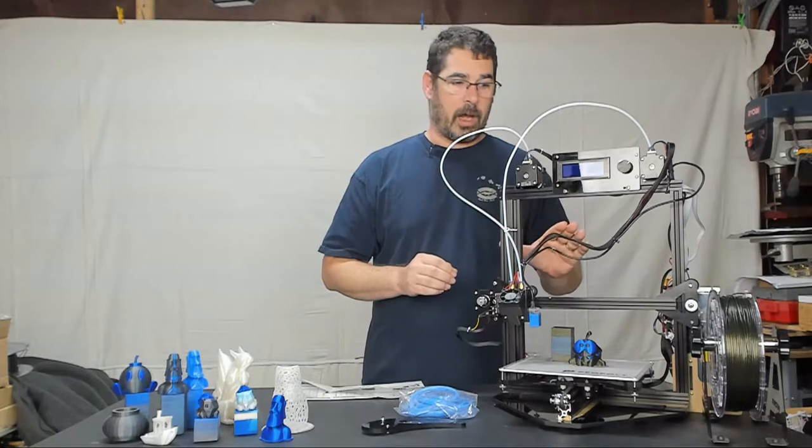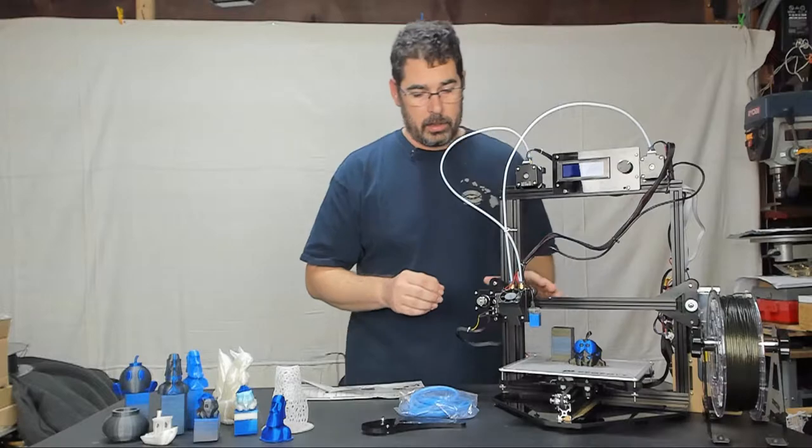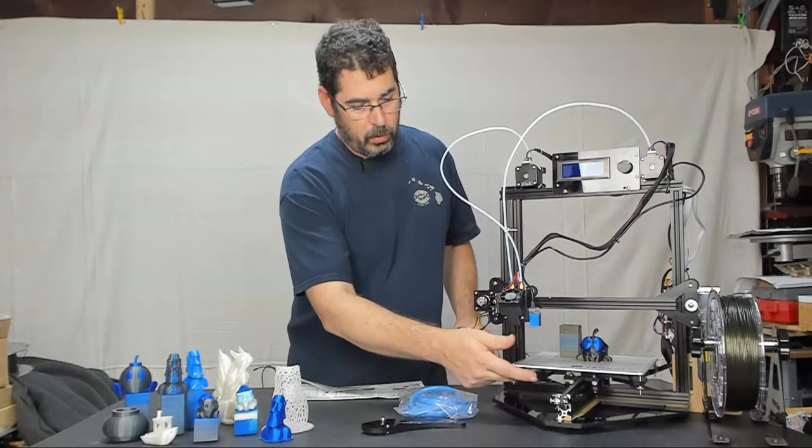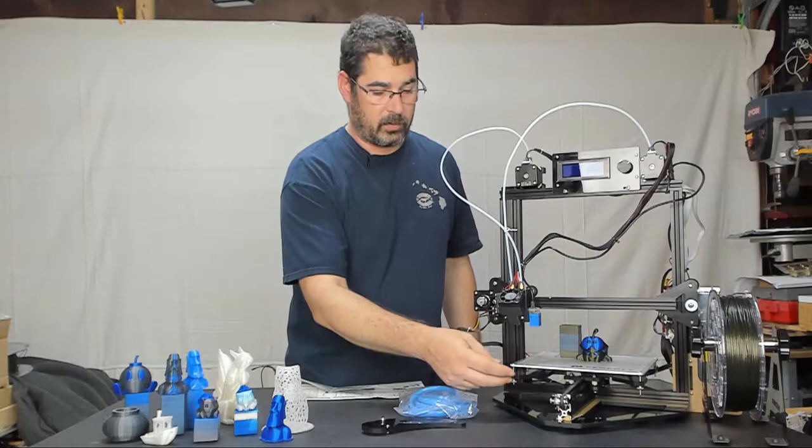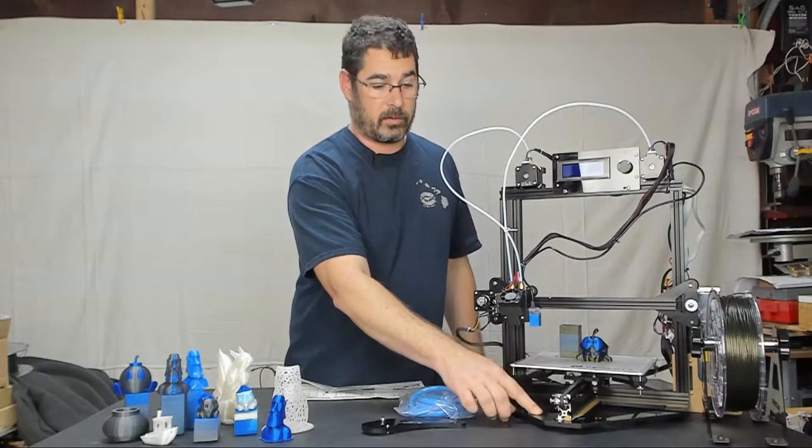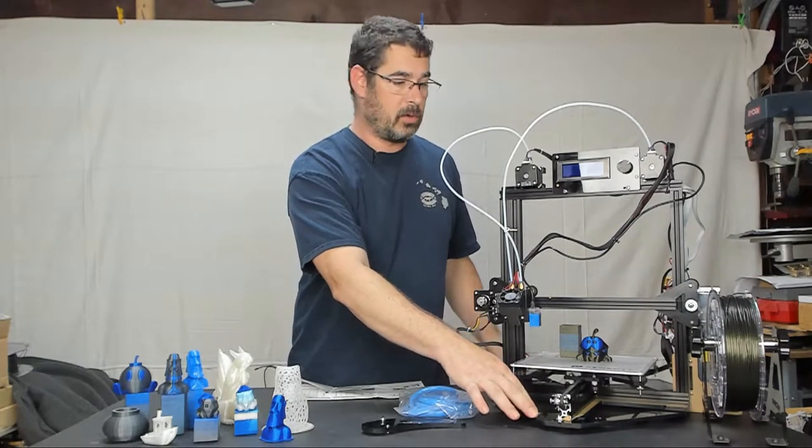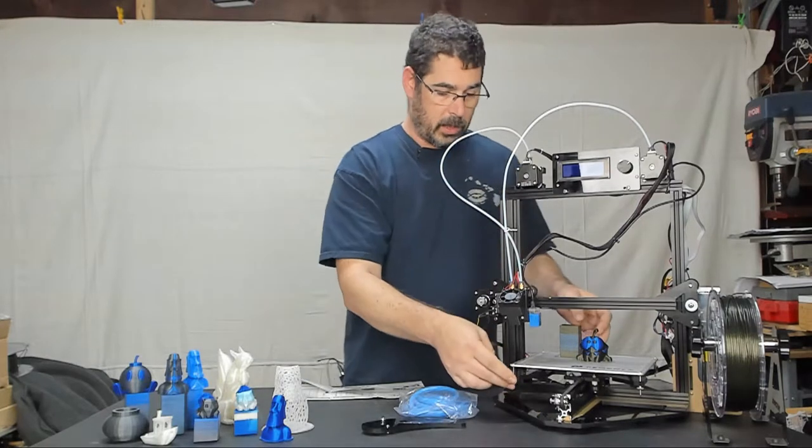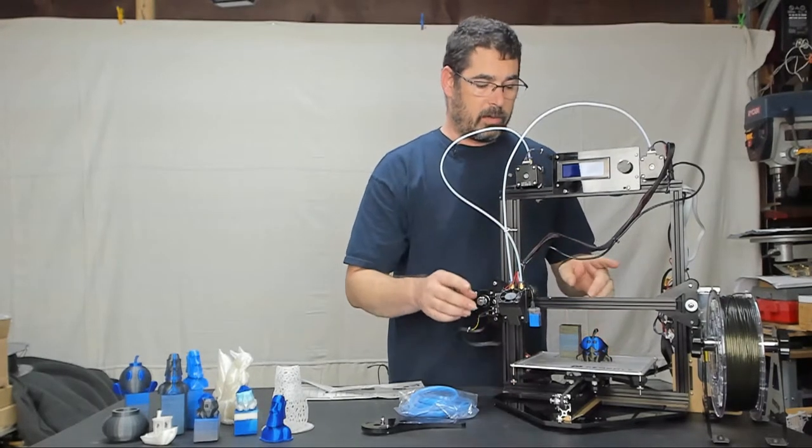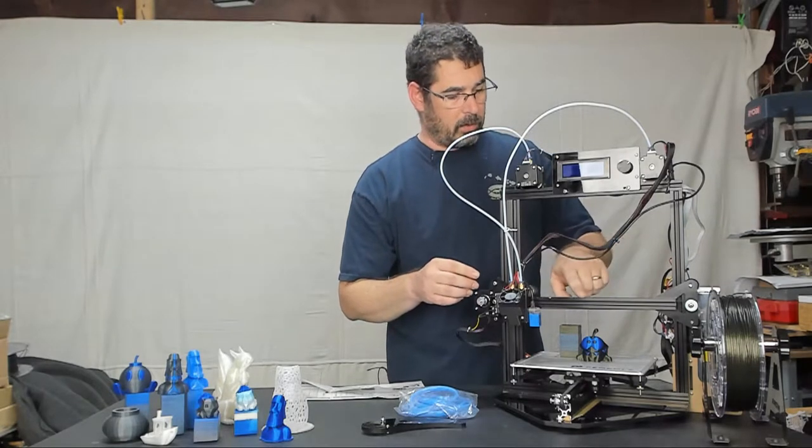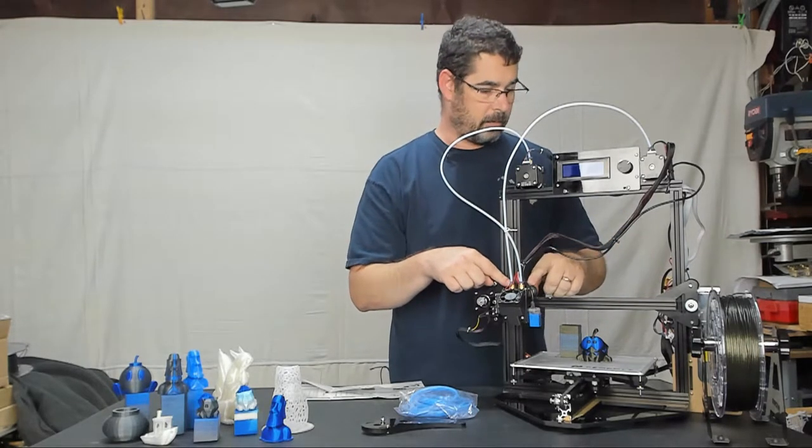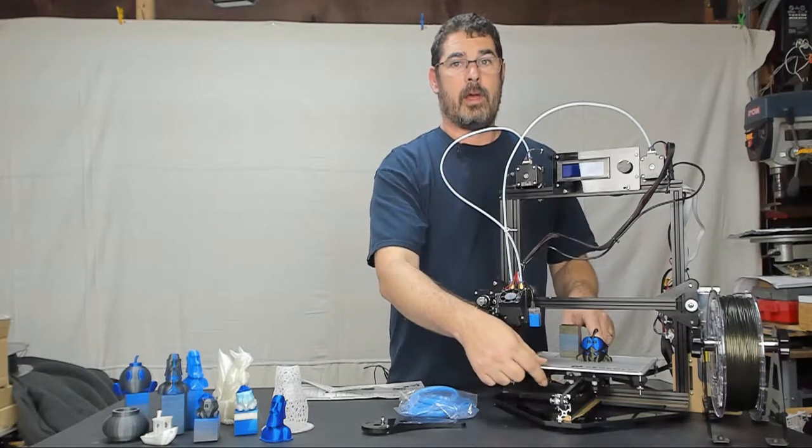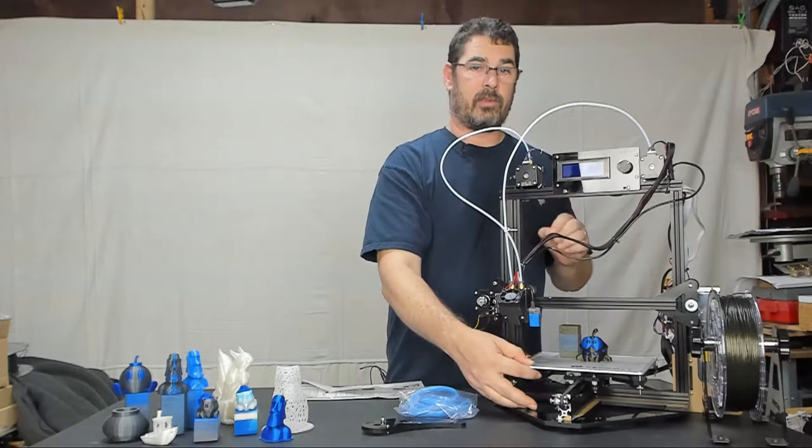So to start off with, the things that I don't like about it is on the build plate down here, the lower piece for the Y axis is acrylic as is the base. It doesn't seem to be too bad on the base but you do have a little bit of flex.